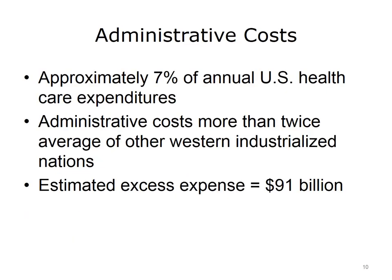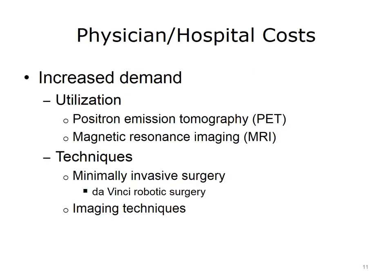Administration costs are estimated to contribute approximately 7% of total healthcare expenditure in the U.S. A study by the McKinsey Global Institute found that administrative costs account for more than twice the average spent by other industrialized nations and contribute $91 billion annually in excess healthcare expenditures in the U.S. Along with new technology, increased demand and utilization also contributes to increased hospital and physician costs.